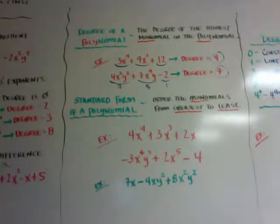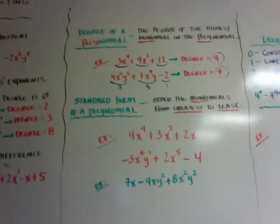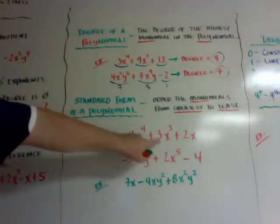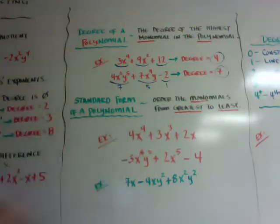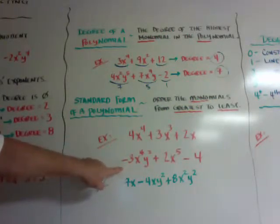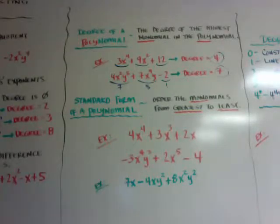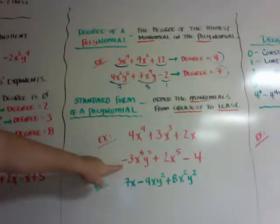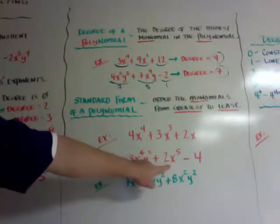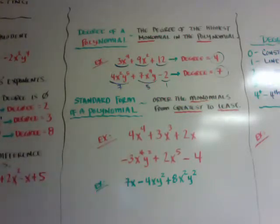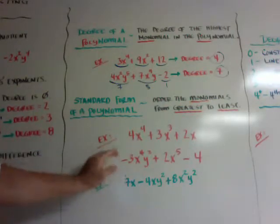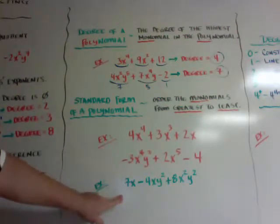When you're doing standard form of a polynomial, you need to order the monomials from greatest to least degree. This degree is four, this degree is three, this degree is one — so that's in standard form. It's okay to have a negative in front, because you're just looking at the degree. So this degree is six, this degree is five, this degree is zero. You put the highest degree monomial first. Here's a quick example — which one do you think would go first?